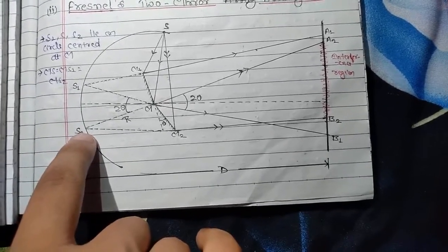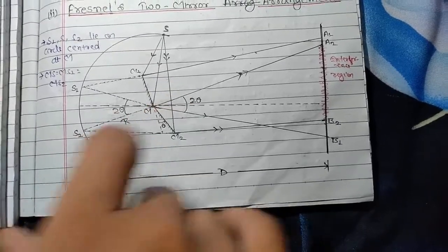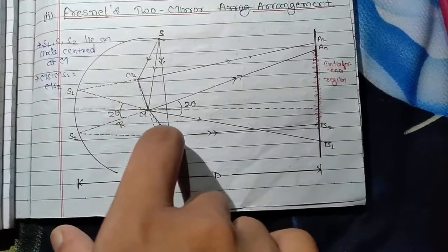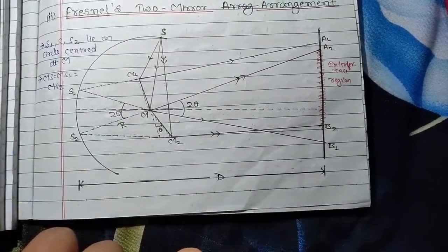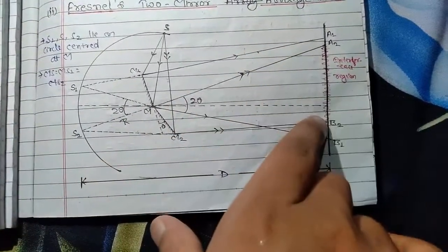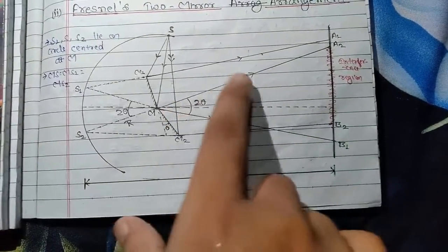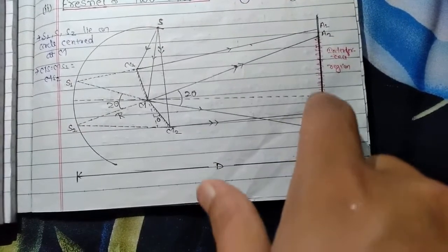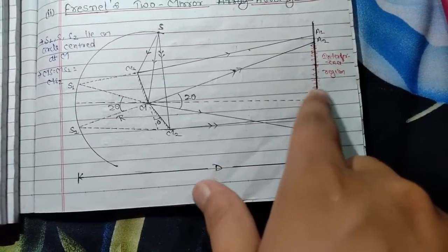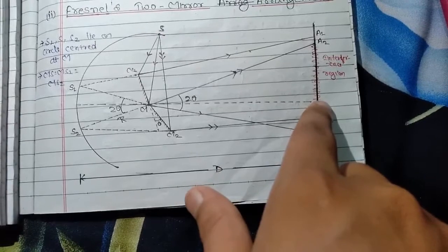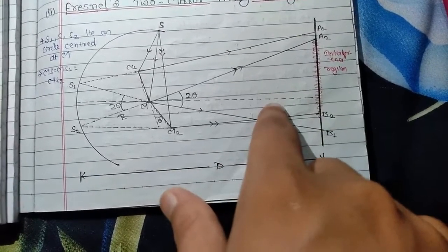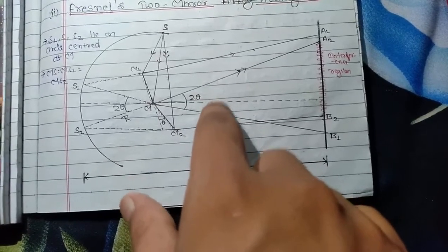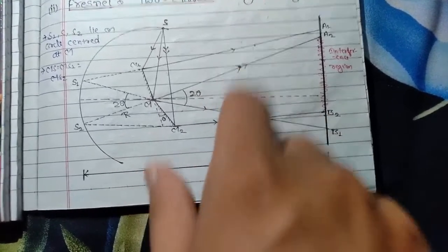When we retrace the paths from mirrors M1 and M2, both light rays superpose in the region A2-B2. In this region, we observe the interference pattern, because both rays reflected from M1 and M2 superpose only in this region.